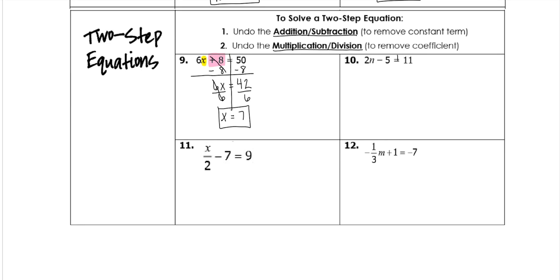On our next one, these are our two sides. Our variable is here. We want to move things away from it. Look for the addition or subtraction first. So this is our subtraction. So we're going to do the opposite, which means we're going to add 5 to both sides.